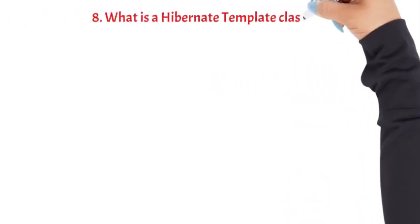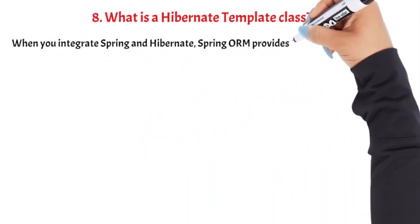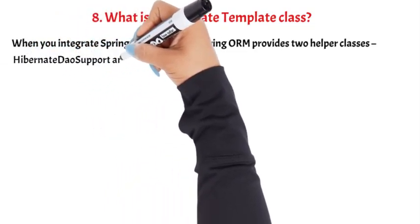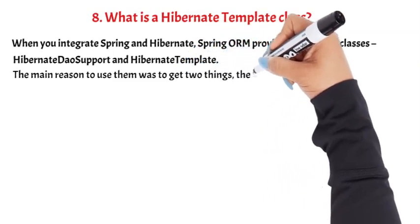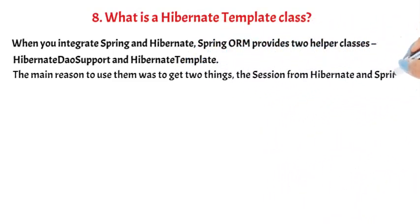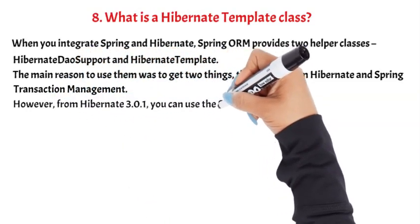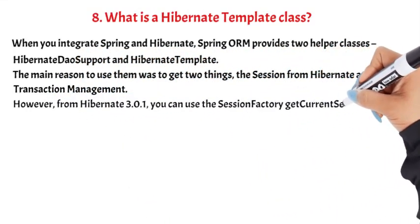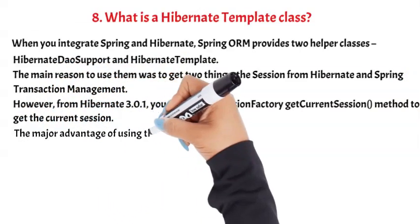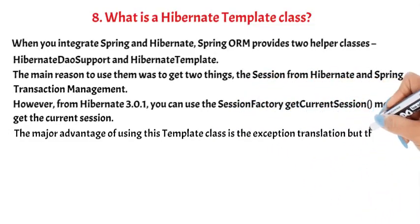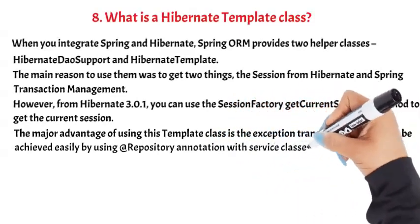Question 8: What is a Hibernate Template class? When you integrate Spring and Hibernate, Spring ORM provides two helper classes: HibernateDAOSupport and HibernateTemplate. The main reason to use them was to get two things: the session from Hibernate and Spring Transaction Management. However, from Hibernate 3.0.1 onwards, you can use the Session Factory's get current session method to get the current session. The major advantage of using this template class is exception translation, but that can be achieved easily by using the @Repository annotation with service classes.